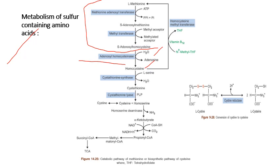Homocysteine then condenses with another amino acid, serine, to form cystathionine with the help of the enzyme cystathionine beta-synthase. Further, hydrolytic cleavage of cystathionine leads to the formation of homoserine plus cysteine by the enzyme cystathionine lyase. Both steps require the coenzyme pyridoxal phosphate.